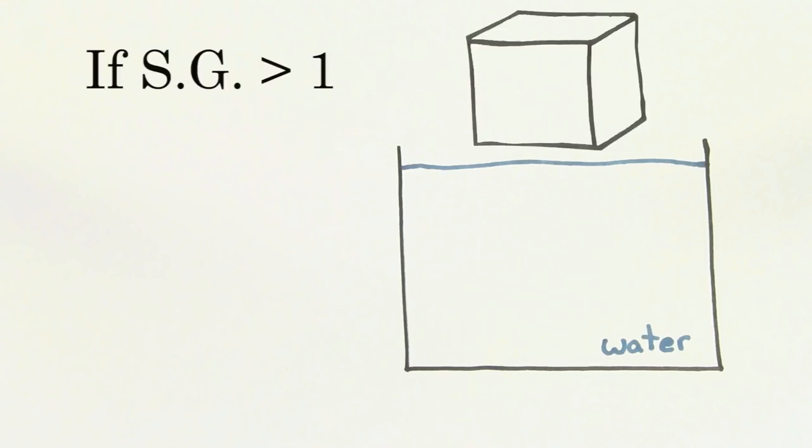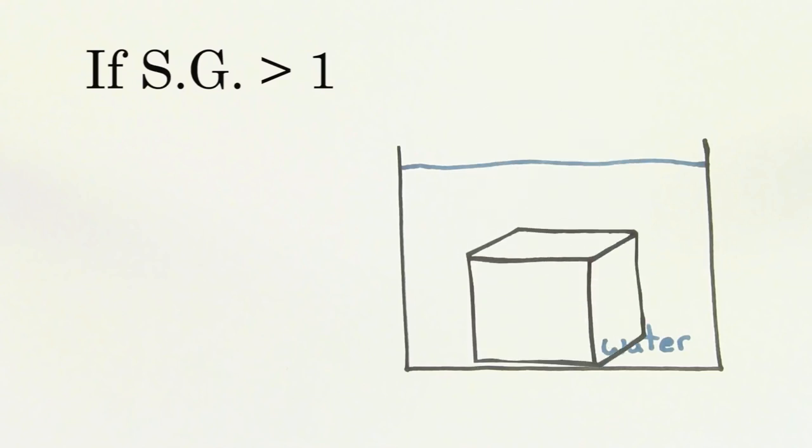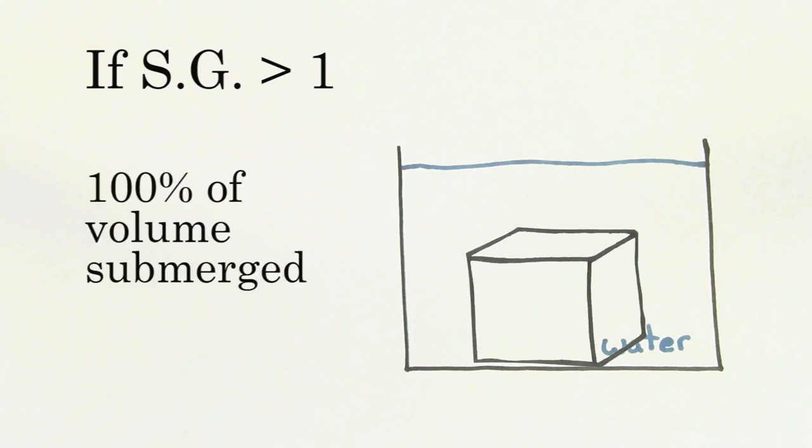So, if the specific gravity of an object is greater than 1, that object is going to sink if placed freely in water, and it'll have exactly 100% of its volume submerged.